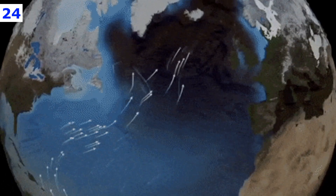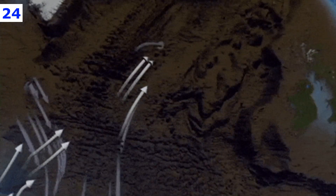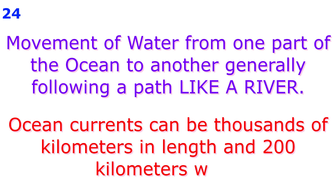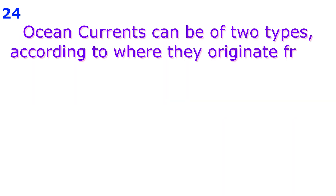Streams of water move along the surface of the ocean in definite paths. Such more or less permanent streams of water which flow in a definite direction are known as ocean currents. In short, the regular movement of water from one part of the ocean to another is called an ocean current. Ocean currents are like rivers in the ocean — thousands of kilometers in length and sometimes about 200 km wide.